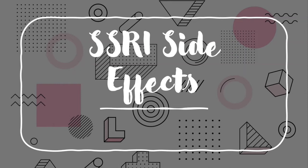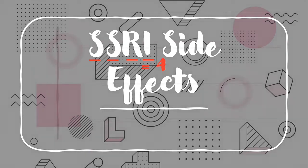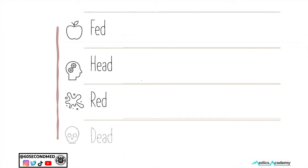In order to remember these side effects, we're going to remember that SSRI has four letters and therefore there are four different groups of side effects. These different groups all rhyme: fed, head, red, and dead.